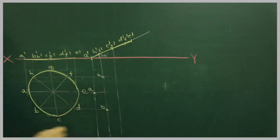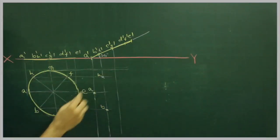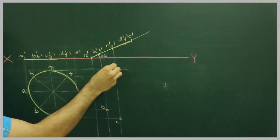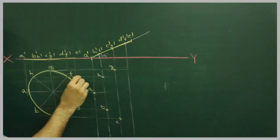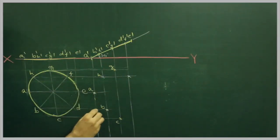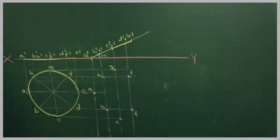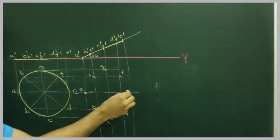C dash, G dash from here. G and C from here, you get C and G. Then you project D dash, F dash, and F and D from here. Same way, D dash from here and D from here.